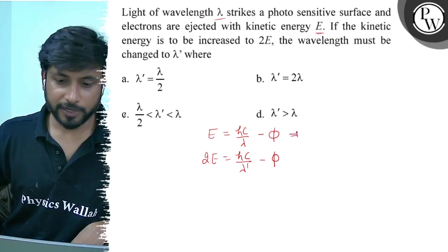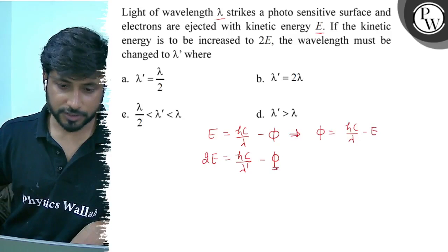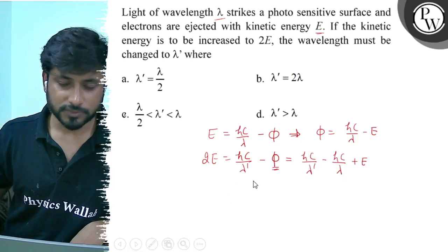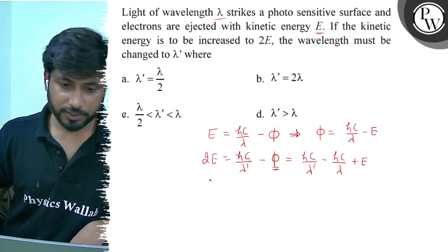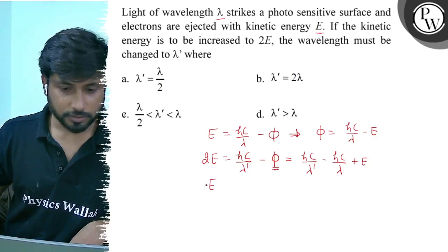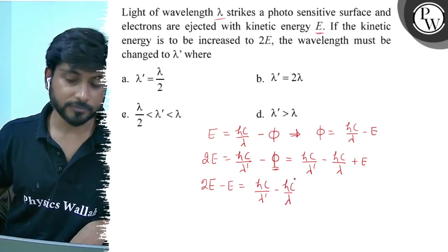These are two equations — this is the first equation. Let's find the value of phi: phi equals hc by lambda minus E. Now substituting phi into the second equation, we get 2E equals hc by lambda dash minus hc by lambda plus E. Taking E to one side: 2E minus E equals hc by lambda dash minus hc by lambda.